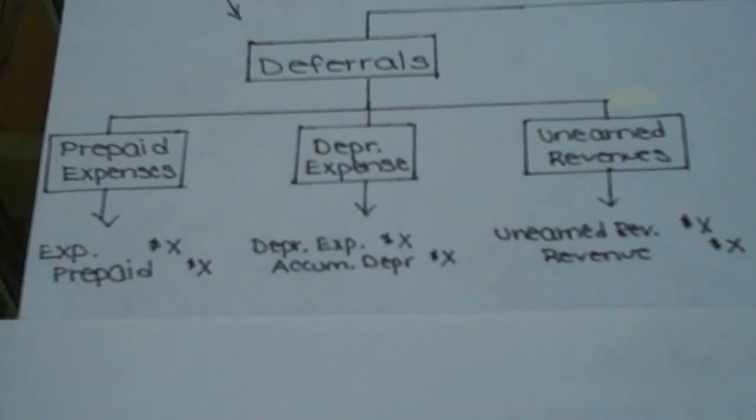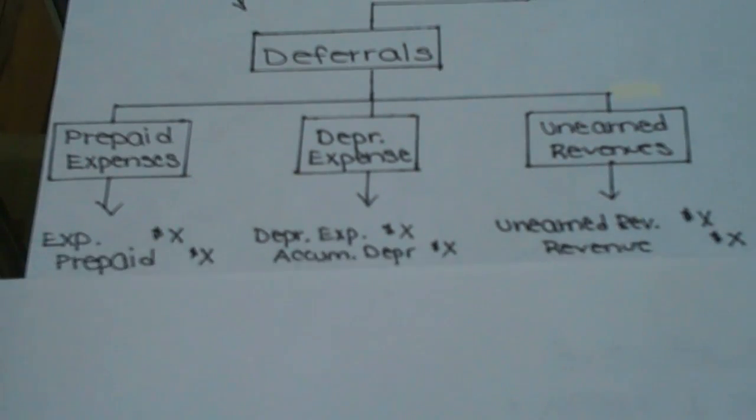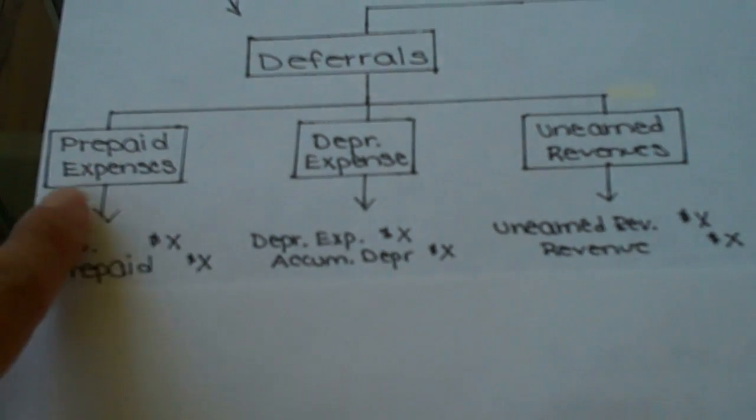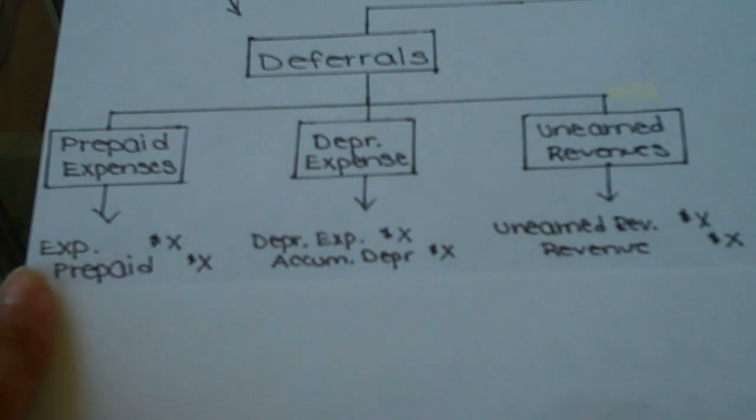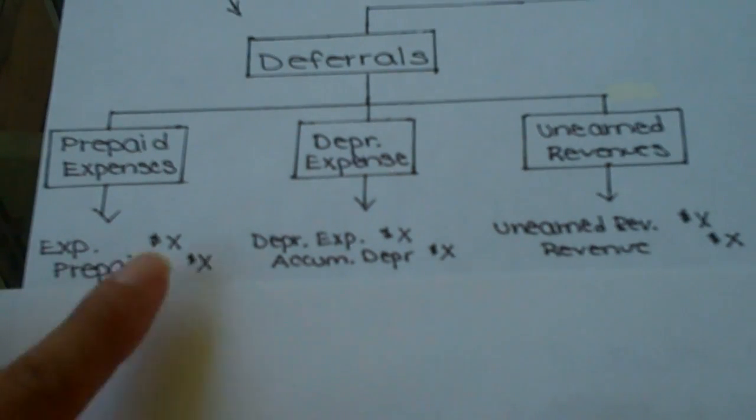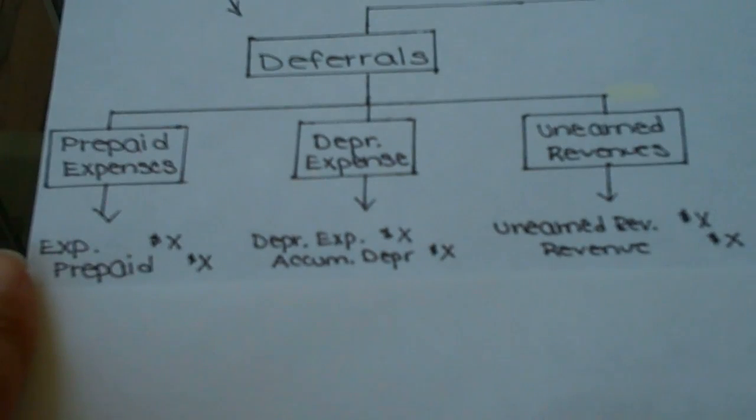So I have some examples of those journal entries, what they would look like. So you can see here the example of the prepaid expense. We decrease the asset, we increase the expense because we're using up the asset that we've prepaid and now move it to an expense. It's no longer an asset if we've used it.